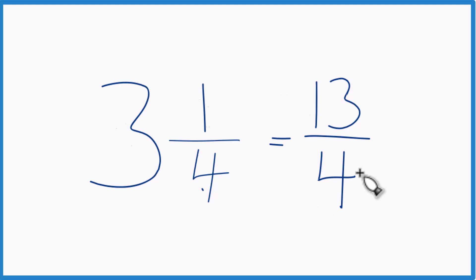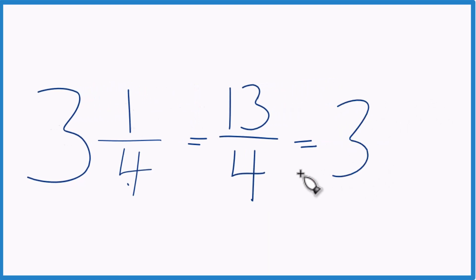And we can even check our work here because 4 goes into 13. 4 times 3, that's 12. So we have 4 times 3 is 12 with 1 left over. Bring the 4 across, 3 and 1/4. That's what we had before.